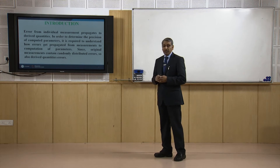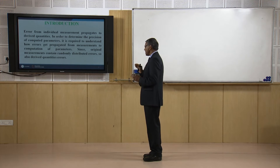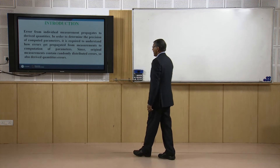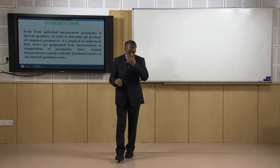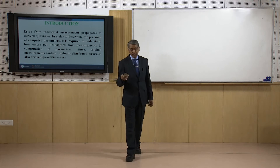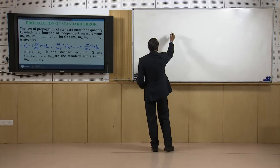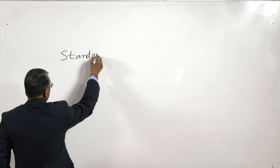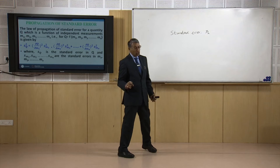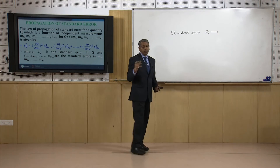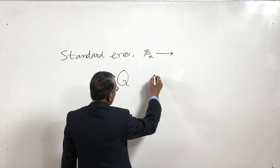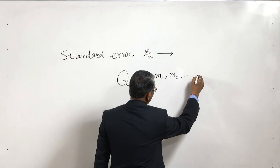Since original measurements contain errors that are random in nature or randomly distributed, we also assume that the derived quantity will contain randomly distributed errors. That means we will make use of the concept of normal distribution which we discussed in the last class. We know that the standard error Sx is the indicator of the quality of measurement. We will like to know how the standard error gets propagated to the derived quantity. Suppose a quantity Q is derived out of measurements M1, M2, M3 up to Mn — that means it is a quantity derived from n independent parameters.